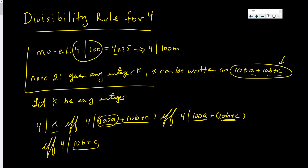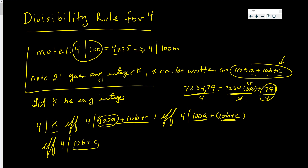But ten b plus c is just the last two digits of the number. For example, take seventy two thousand three hundred forty nine — that's seven two three four nine. That equals seven two three four times one hundred plus seventy nine. We know four divides that hundred multiple, so the only way four is going to divide the sum is if and only if four goes into seventy nine — the last two digits. And that's the rule: four divides an integer if and only if four divides the last two digits.